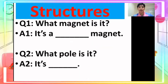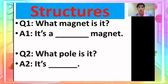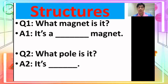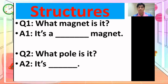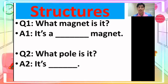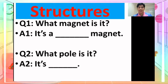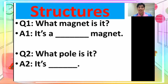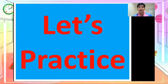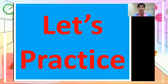Now let's proceed to our sentence structures. For sentence structure one, I am going to say: 'What magnet is it?' And you are going to answer: 'It's a blank magnet.' Sentence structure number two: 'What pole is it?' And you are going to answer: 'It's a blank.'